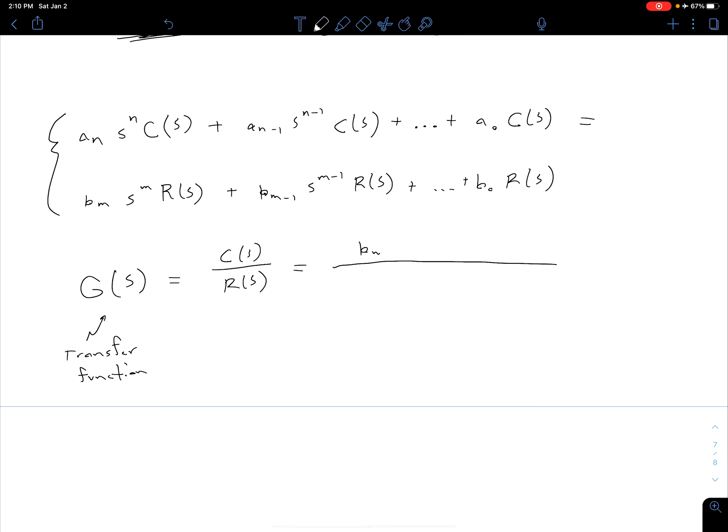And so that ends up being b sub m times s to the power of m plus b sub m minus 1 s to the power of m minus 1 plus so on and so forth all the way down to b naught.